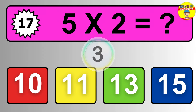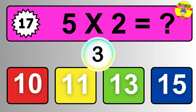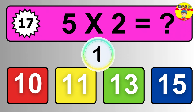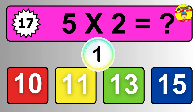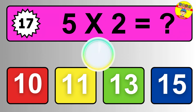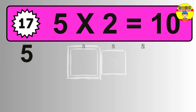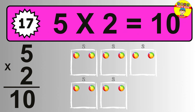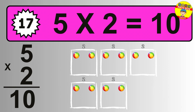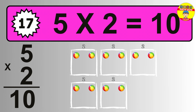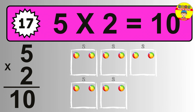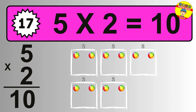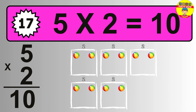Question seventeen. Five times two equals what? The answer is five times two is 10. To calculate, we have five groups with two balls each one. So how many balls do we have? 10 balls.